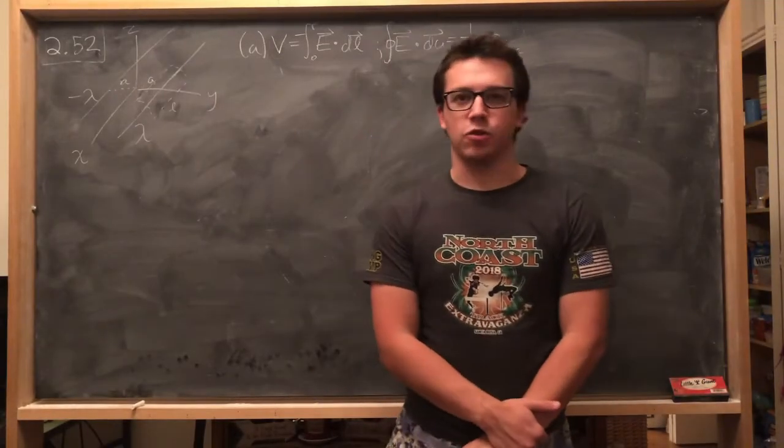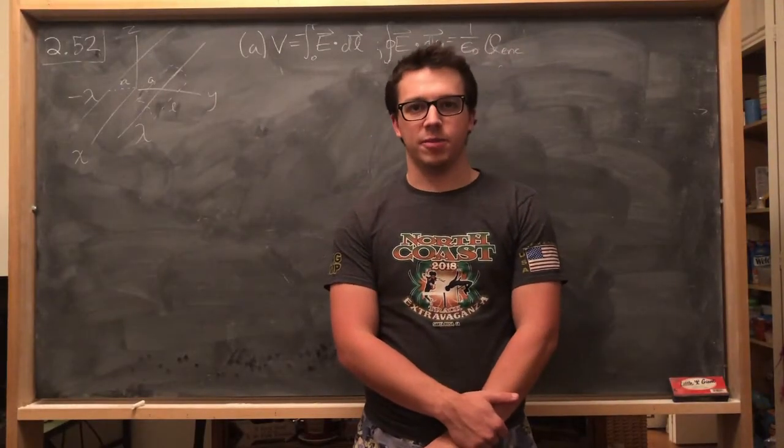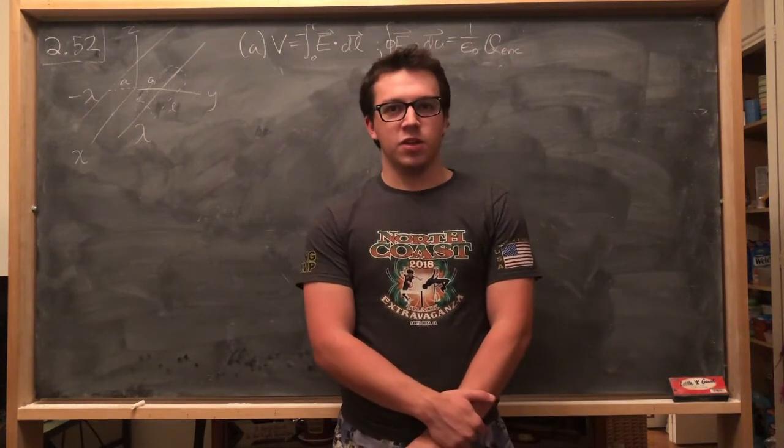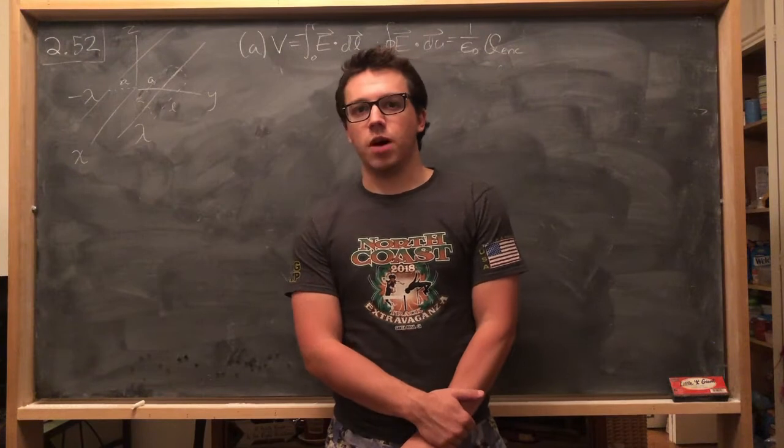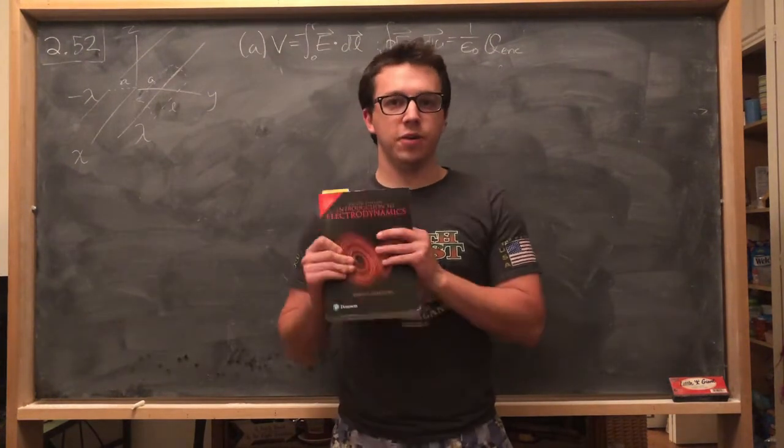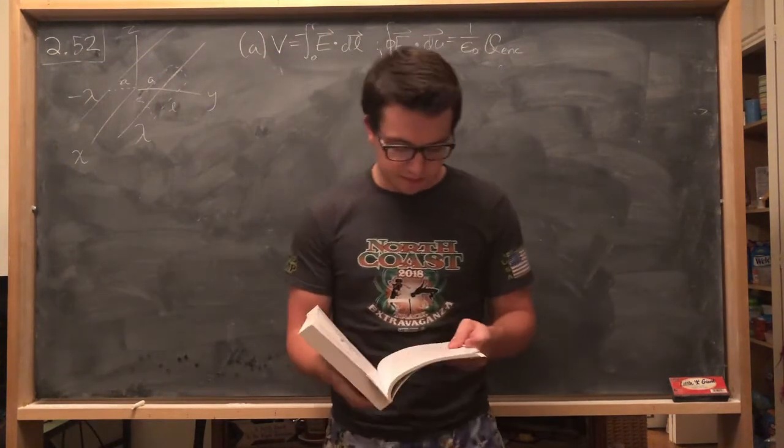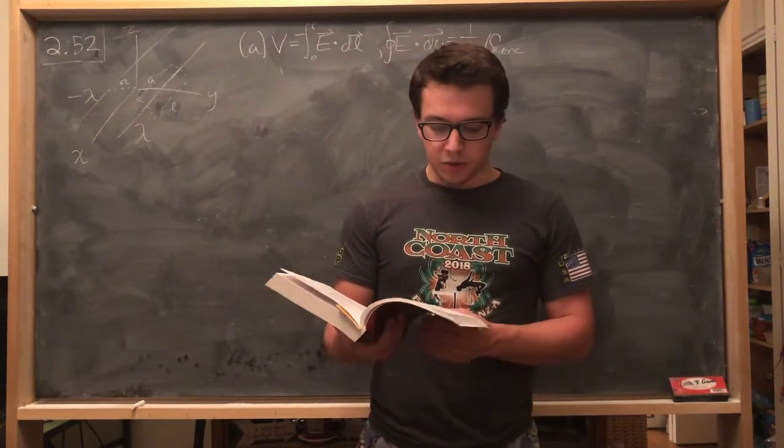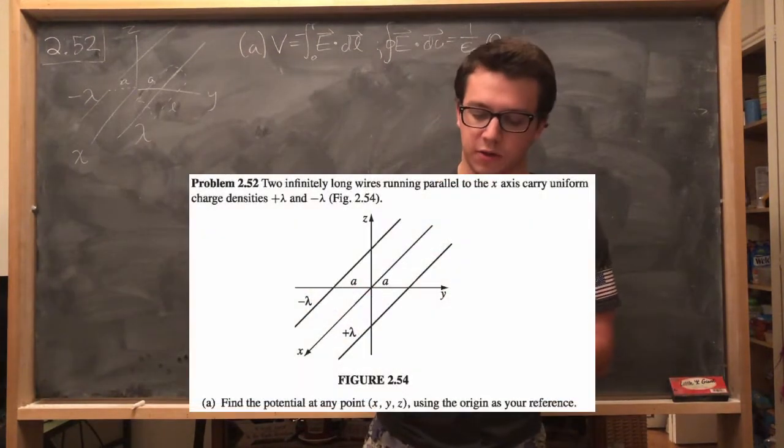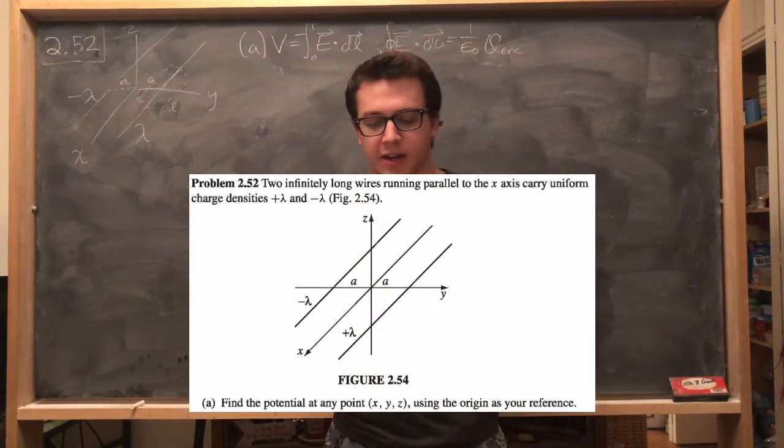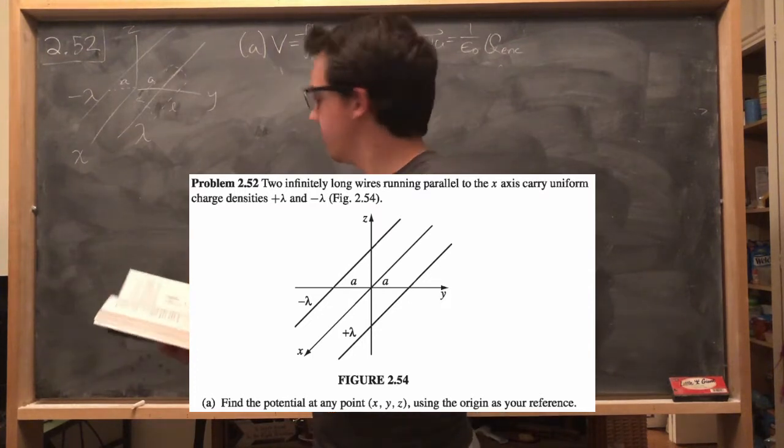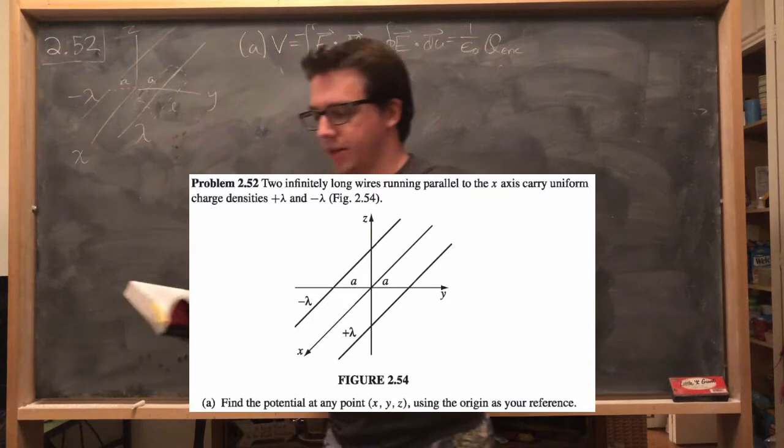Hello and welcome back to Greg Does Physics. My name is Greg and today we are going to be doing some physics. For this episode I will be doing problem 2.52 in Griffith's E&M. And 2.52 asks us this: Two infinitely long wires running parallel to the x-axis carry uniform charge densities plus lambda and minus lambda, given by figure 54 which should look like this.